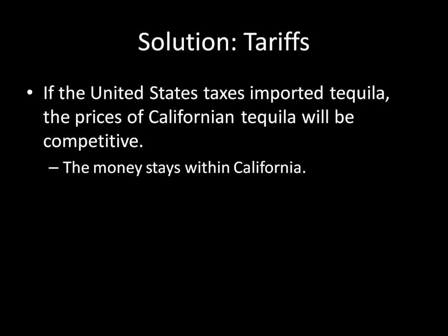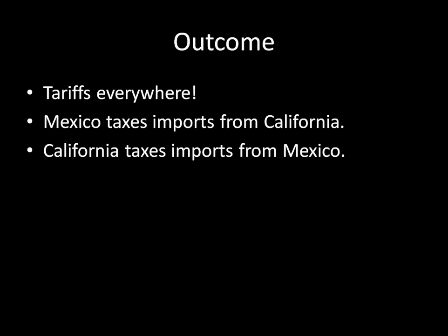So California's solution, or the solution for the United States, is to impose a tariff on tequila. That will raise the prices of Mexican tequila within California and lead California consumers to buy California tequila instead, keeping the tequila money within California. So when both sides establish tariffs to protect companies within their own borders, you get tariffs everywhere — Mexico taxing imports from California and California taxing imports from Mexico — and everybody loses because of an inefficient economy. Econ 101 tells us that taxes lead to inefficiency, and you'd be better off removing those taxes and letting everything run smoothly.